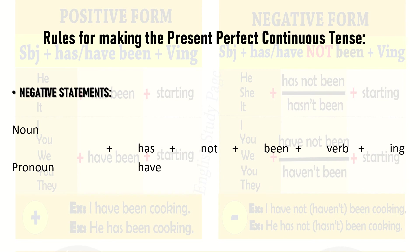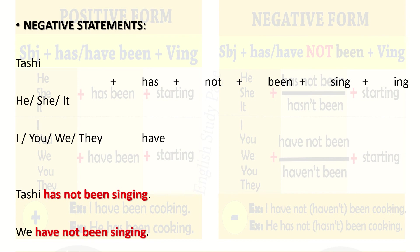In a negative sentence, we have the noun or pronoun — he, she, it, I, you, we, they, and so on — to which we add 'have' or 'has', then 'not' (the negative word). We can also use 'never', 'neither', 'nor', and so on. Then we add 'been', then the verb, and '-ing'. For example: 'he/she/it has not been singing'; 'I/you/we/they have not been singing'.